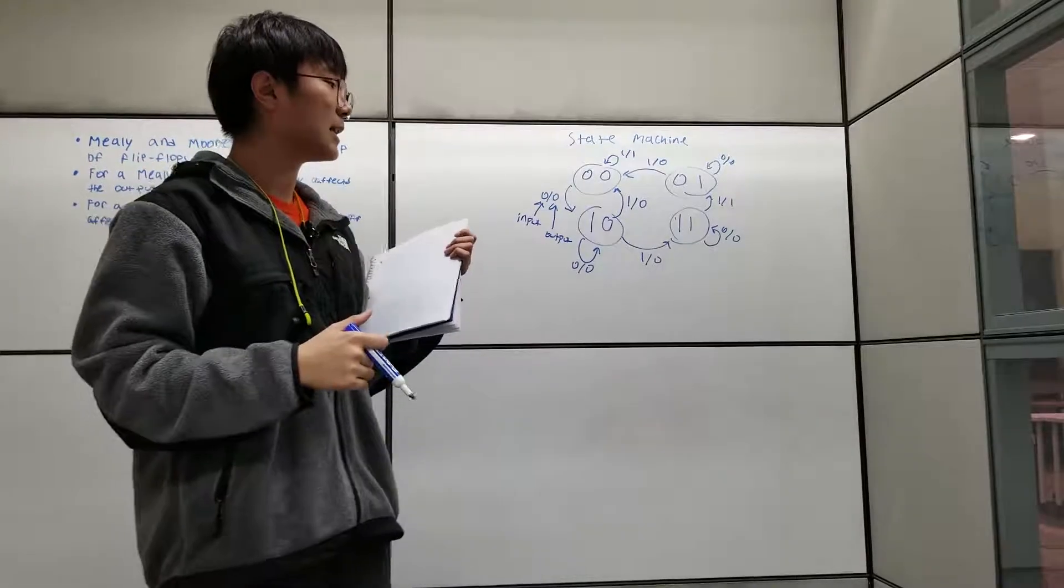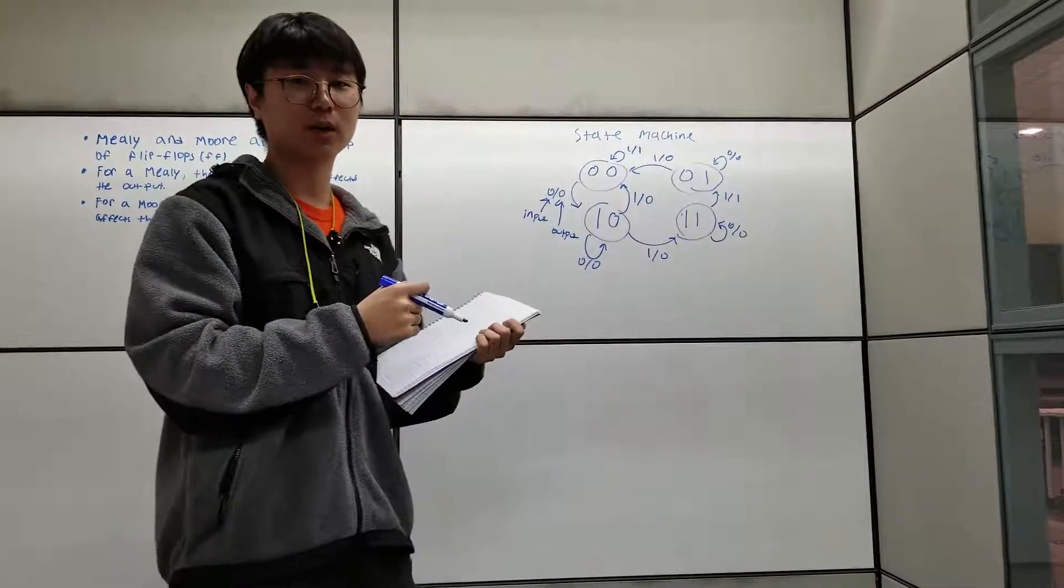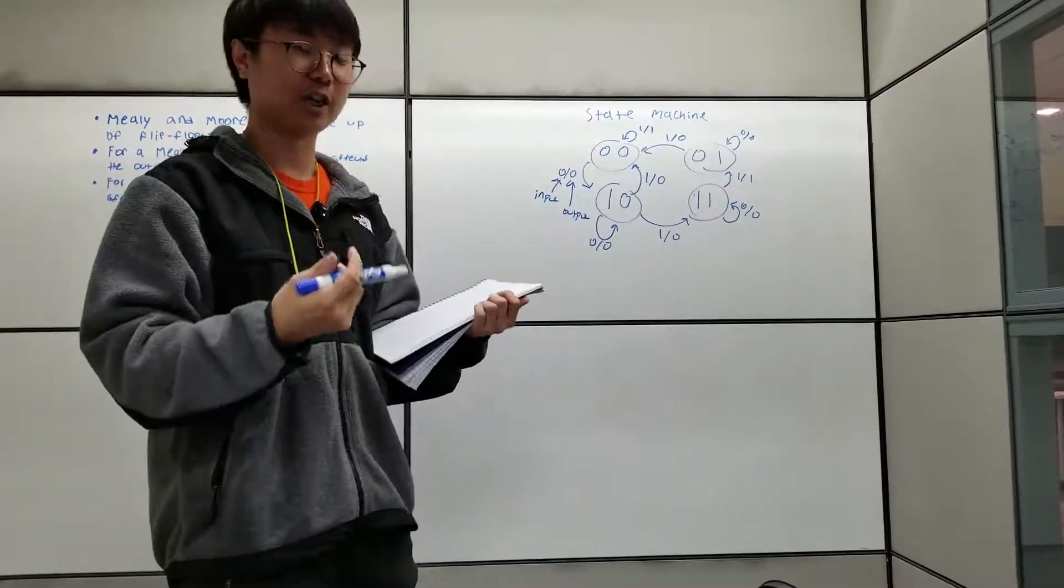So if you see a Mealy state machine, it's going to have one number for the input and one number for the output. Depending on what your input is, the output can change.